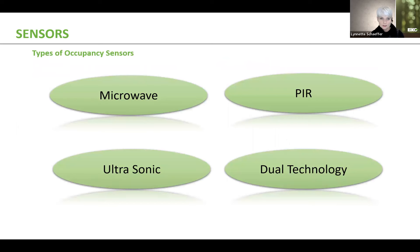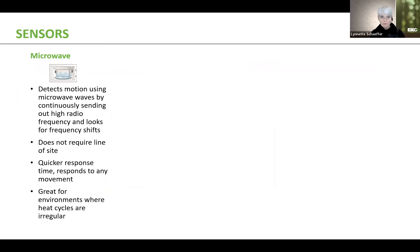Now there are four types of occupancy sensors. There's microwave, PIR, ultrasonic, and dual technology. Microwave basically just detects motion using microwaves by continuously sending out kind of like these radio frequencies. And it looks for any frequency shifts. So it does not require line of sight. It's not like the matrix where you have lines of sight coming out, you know, red lines. It is actually just looking for a shift in the frequency. Microwave sensors are great because they have a quicker response time. It responds to any form of movement. Keep that in mind. It's great for environments where heat cycles are also irregular because it's not looking at any type of heat in the space.